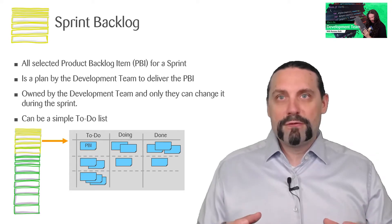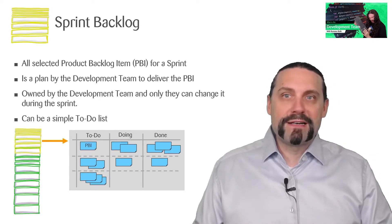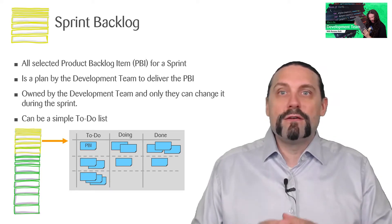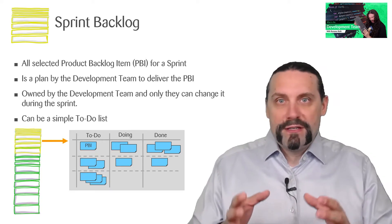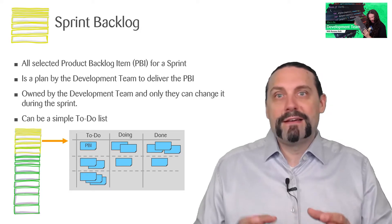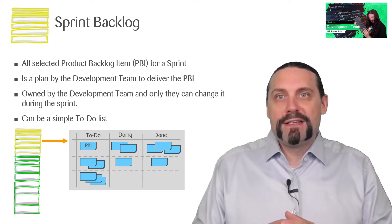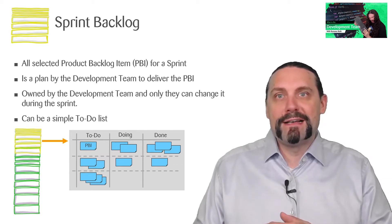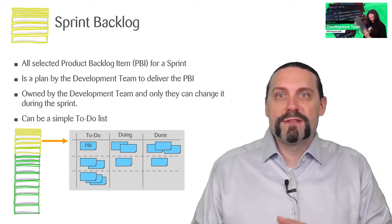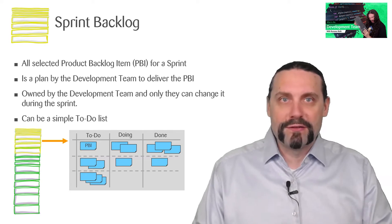When we look at the sprint backlog, it is just a simple to-do list. You can make it as complicated as you like, but in general in its simplest form it has three columns: to-do, doing, and done.